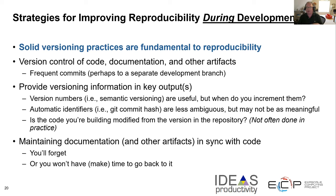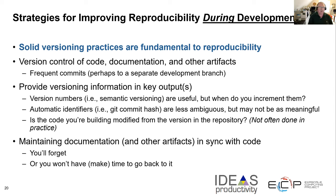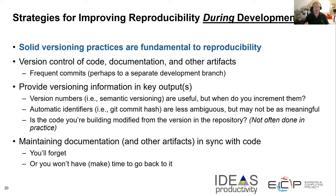During development, one thing to think about is solid versioning practices. You want to make sure that you have all of your code, documentation, and other artifacts under version control. You want to do frequent commits so that you are consistently capturing anything important to the evolution of the project, so that you have a complete history. Second, provide versioning information for key outputs — your code can output a version number, or you can use the git hash or things like that.